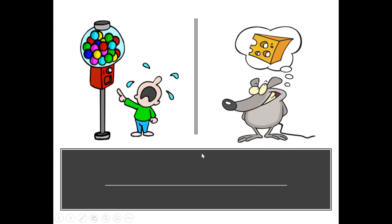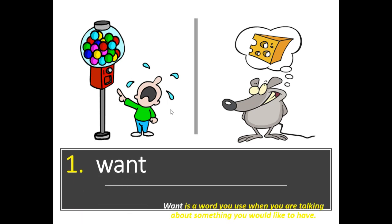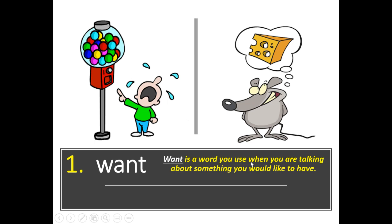Here's our first two pictures. What do you notice or see, and how are they both the same or similar? I noticed that this boy really wants something because he's crying and pointing, and I noticed that this mouse was thinking about cheese. So I would say they both want something. The word is want — number one.